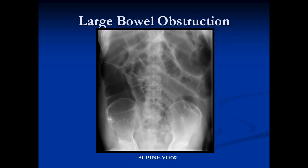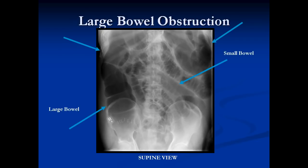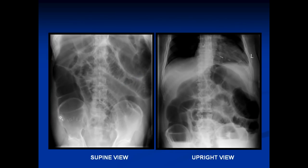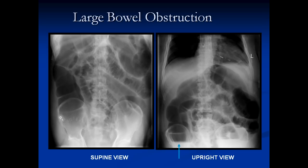Here's a large bowel obstruction — lots of distension of loops of small and large bowel all the way around, but no air in the rectum or descending colon, so the obstruction is probably at the splenic flexure. We can identify large bowel because the haustra go only partway across, while small bowel plica semicircularis go all the way around. Large bowel forms the window frame around the outside, with small bowel in the center. On the upright view, we see air-fluid levels in both the large bowel and the small bowel.